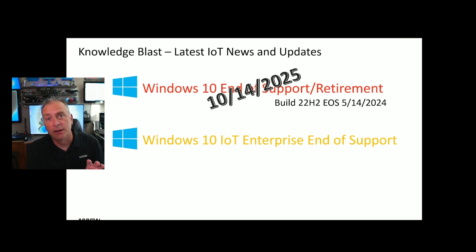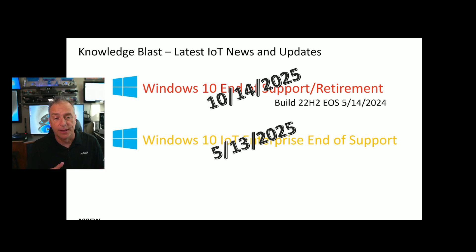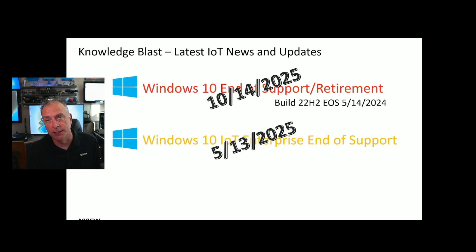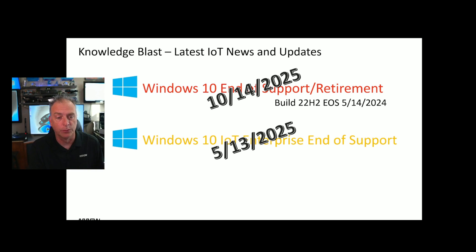For Windows 10 IoT Enterprise — not the LTSC version, but the GAC version — the end of support for the current Build 22H2 is May 13th, 2025. You get one additional year compared to the regular channel Windows 10. That does leave a window between that and the October 2025 retirement date, so there's some interesting spacing there. We don't know if there's going to be another build of Windows 10, so we'll have to stay tuned. As soon as we find out, we'll let everyone know.